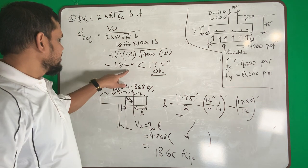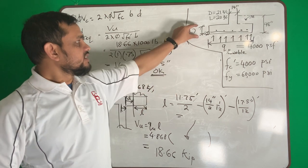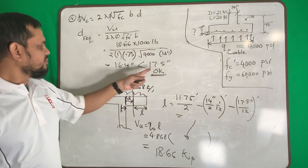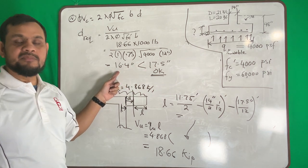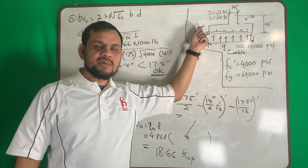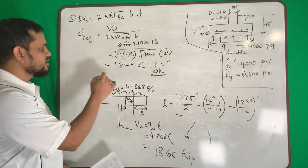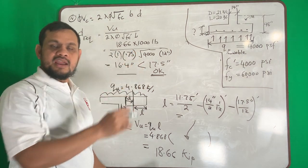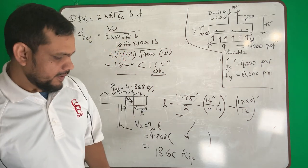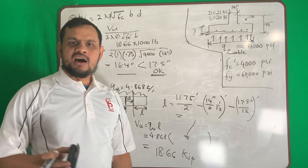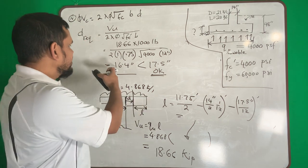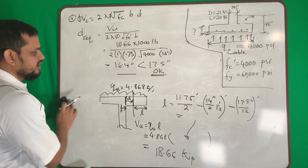If the shear check were not satisfied, you would go back to the beginning and revise the assumed thickness. In my case, 16.4 inches required versus 17.5 inches provided — they are very close, so it is acceptable. The shear design is complete: assume depth, calculate load, calculate size, calculate shear force, and check it.